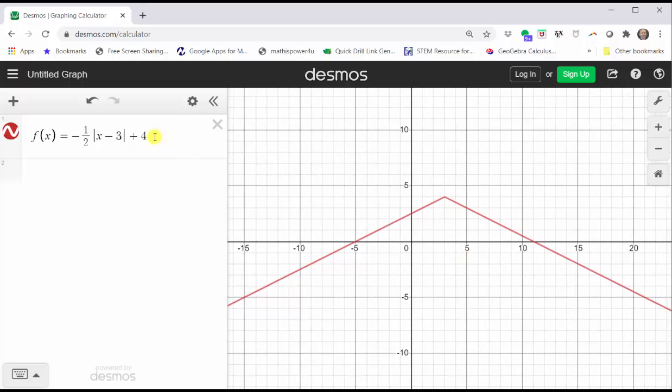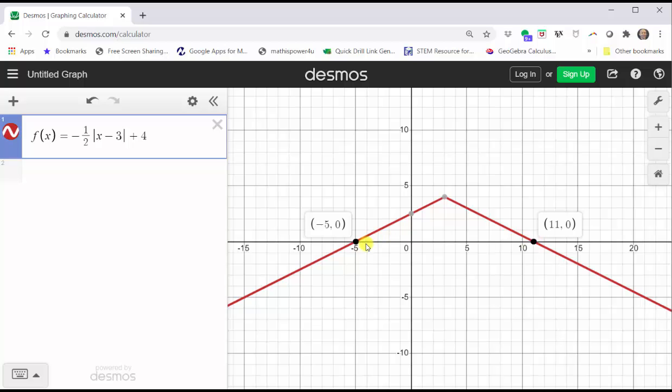Now let's talk about the restriction. We want the graph over the closed interval from negative five to 11. If we analyze the graph, notice how the x-intercepts are negative five comma zero and 11 comma zero, which means with the restriction,